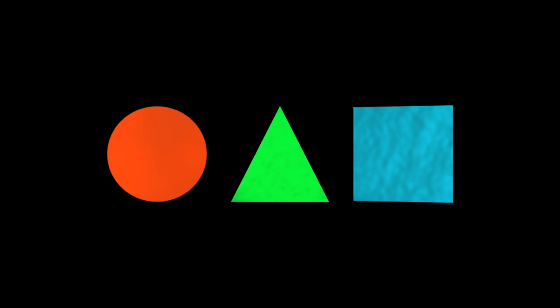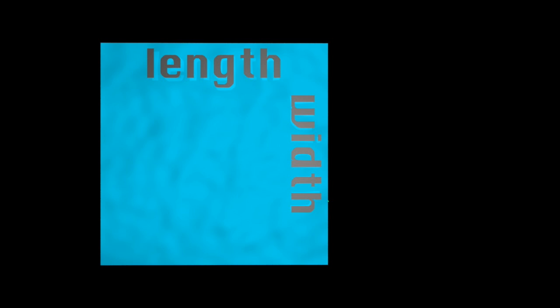Here I have a circle, a triangle, a square. These are all examples of two-dimensional shapes. That means they're perfectly flat. Each shape has a certain length and a certain width. Length and width are the two dimensions.